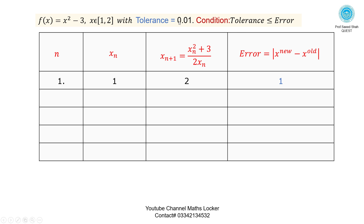Iteration 2: Take xₙ = 2. Then xₙ₊₁ = (4 + 3) / (2×2) = 7/4 = 1.75. Error = |1.75 - 2| = 0.25. Check condition: 0.01 < 0.25, so condition not met — go to next iteration.